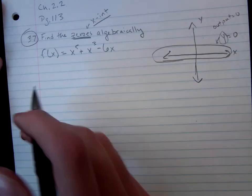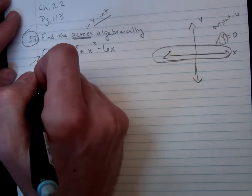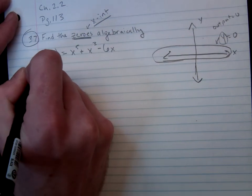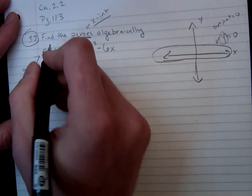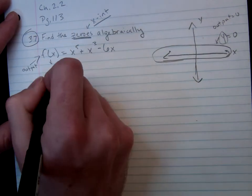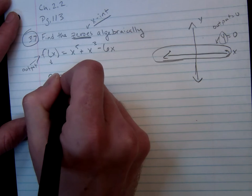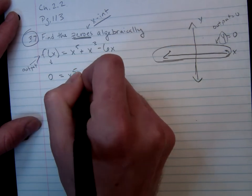So looking at the problem here, I can see that my output is none other than f of x. So what I'm going to do as a first step is I'm going to set that equal to zero, rewrite the rest of my function.